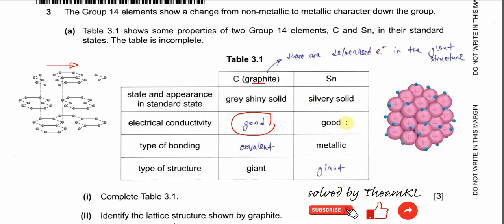For tin, this is a metal. It has delocalized electrons in the metallic lattice, so it can carry charge as well. So both graphite and tin are good electrical conductors.